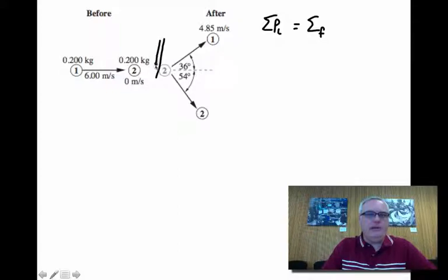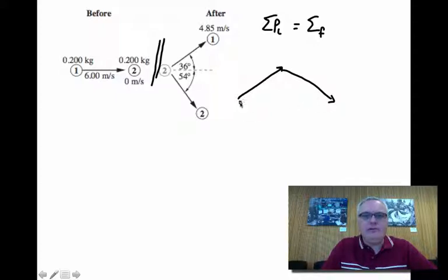So again, here is my before and here is the after. That means this vector here, this momentum vector, has to be equal to the sum of these two. So really what we're doing is drawing a vector diagram. The sum of this vector plus this vector has to be equal to the initial momentum. So this vector here makes an angle of 36 degrees. This vector makes an angle of 54 degrees.